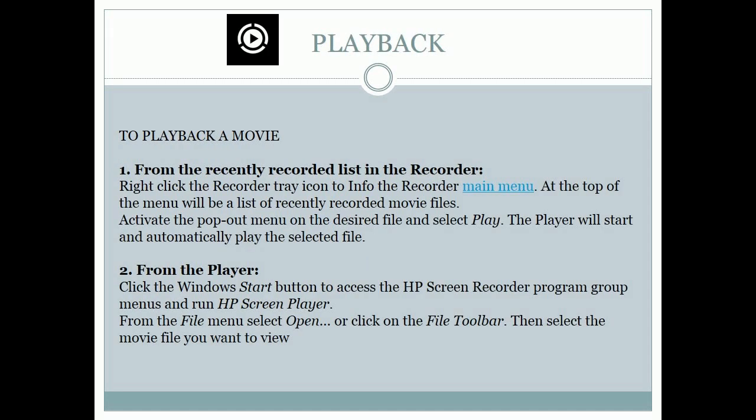How to play back. To play back a movie: 1. From the recently recorded list in the recorder, right-click the recorder tray icon to invoke the recorder main menu. At the top of the menu will be a list of recently recorded movie files. Activate the pop-out menu on the desired file and select Play. The player will start and automatically play the selected file.